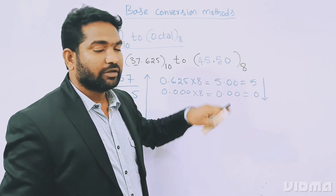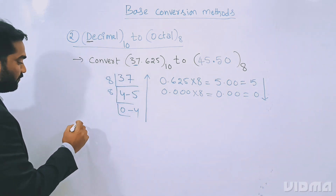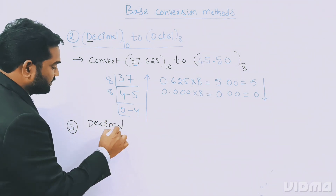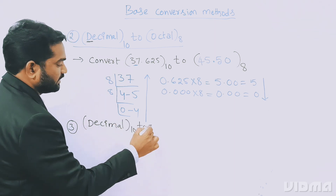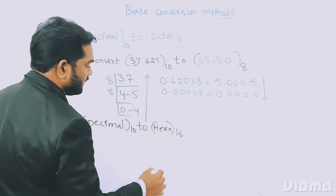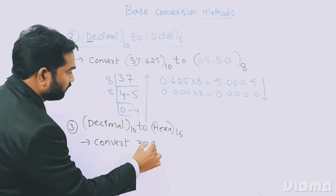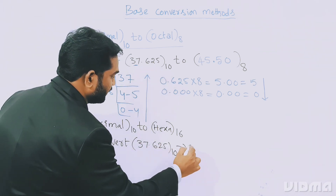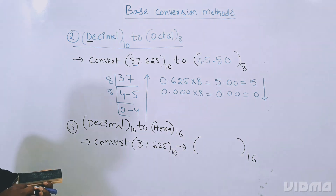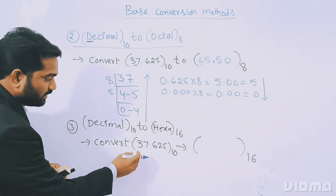Now let me take another example for better understanding. This is the third conversion: decimal base 10 to base 16, which is hexadecimal. I'll use the same number — convert 37.625 of base 10 to base 16. For decimal to hexadecimal, we follow the same procedure: divide the integer part.